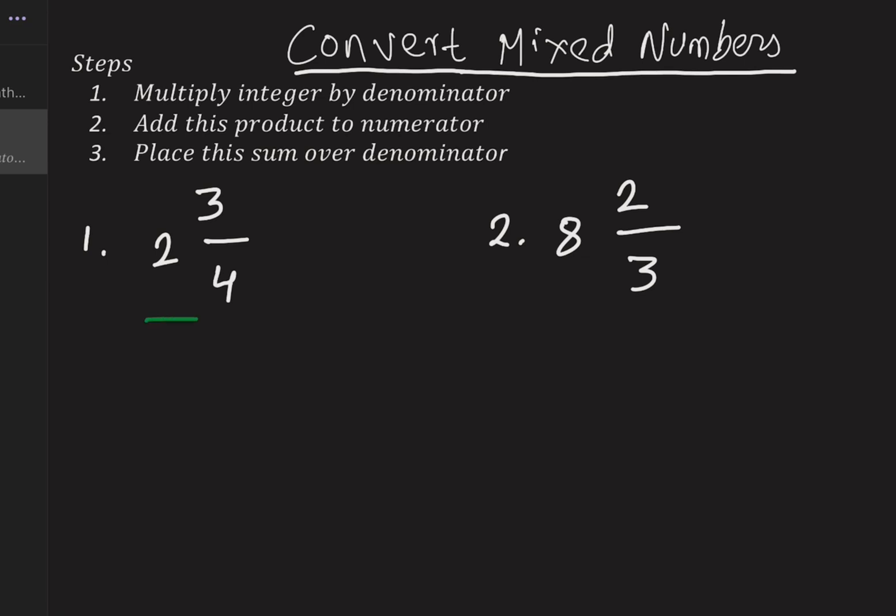If we see example 1 here, 2 is called as the integer, 3 is called as the numerator, and 4 is the denominator.